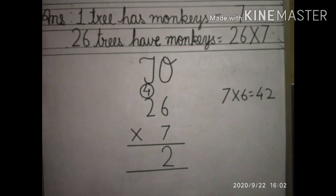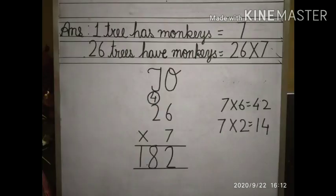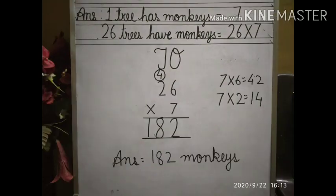After that, we will multiply the digits at the 10's place. Here we have to multiply 7 by 2. 7 ones are 7, 7 twos are 14. Now students, we will add 14 and 4, which gives us 18. So 18 will come here. The product of 26 and 7 is 182.